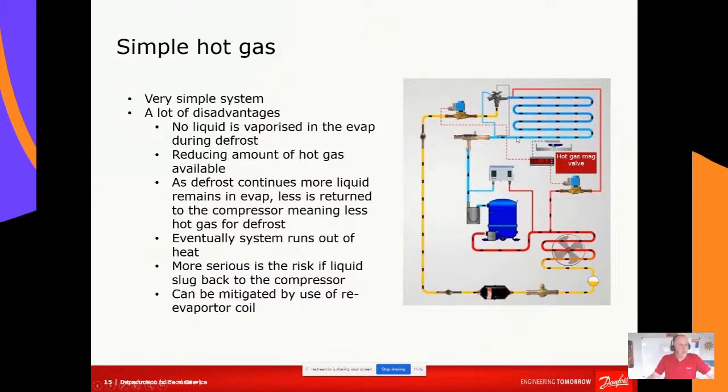Then we've got a crankcase pressure regulator valve or might be an evaporated pressure regulator valve, and that's the normal operation. If you want to do something very simple, you can take a tapping off the discharge line through a hot gas mag valve or solenoid valve that basically feeds hot gas into your expansion line just after the expansion device.